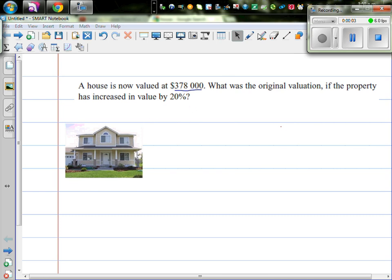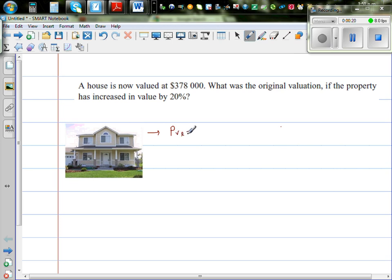Let's look at this question. A house is now valued at $378,000. What was the original valuation if the property has increased in value by 20%? Okay, so this is the present value. Let's write what is given. The present value of the house is $378,000, and it is said that this $378,000 is arrived after an increase of 20%.